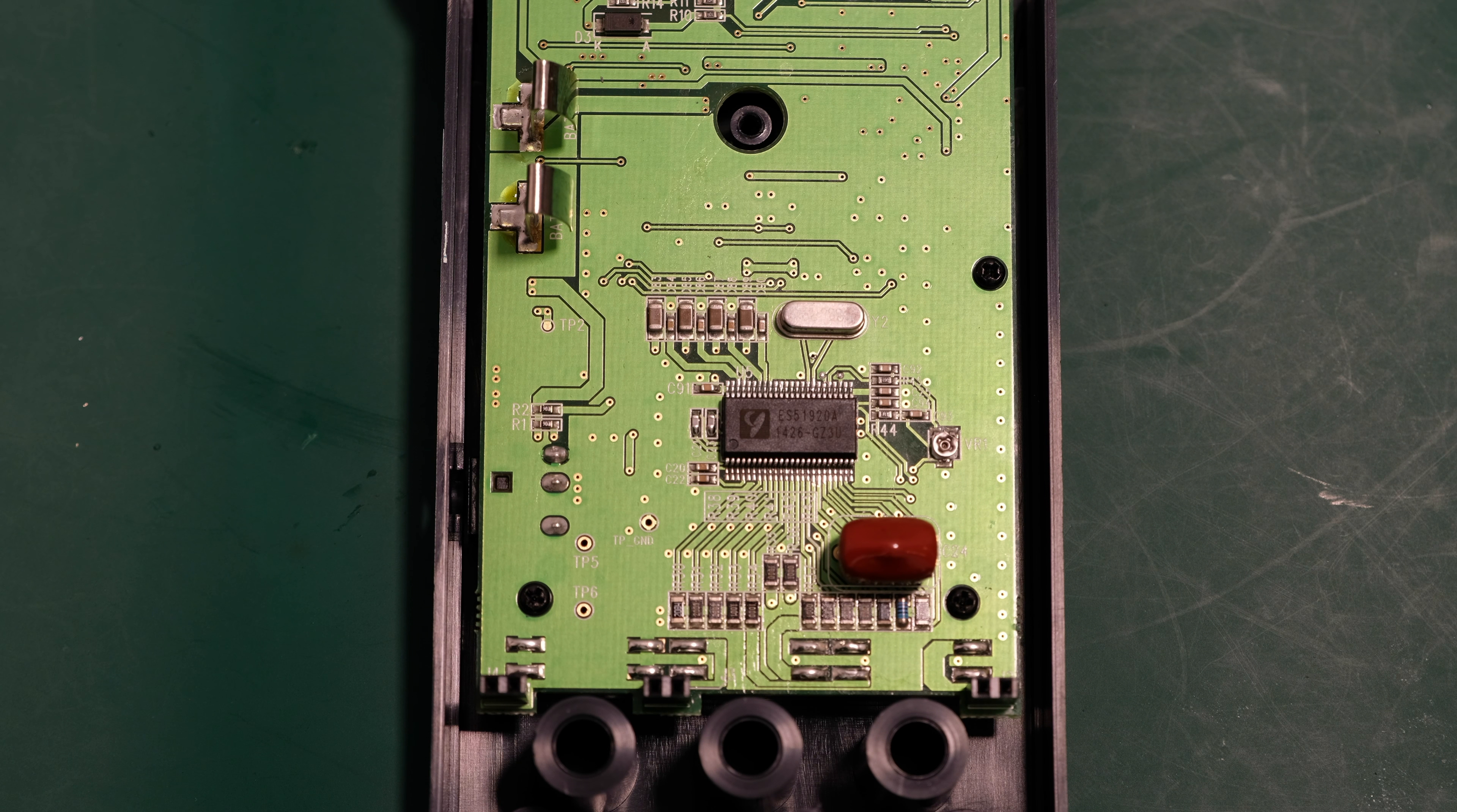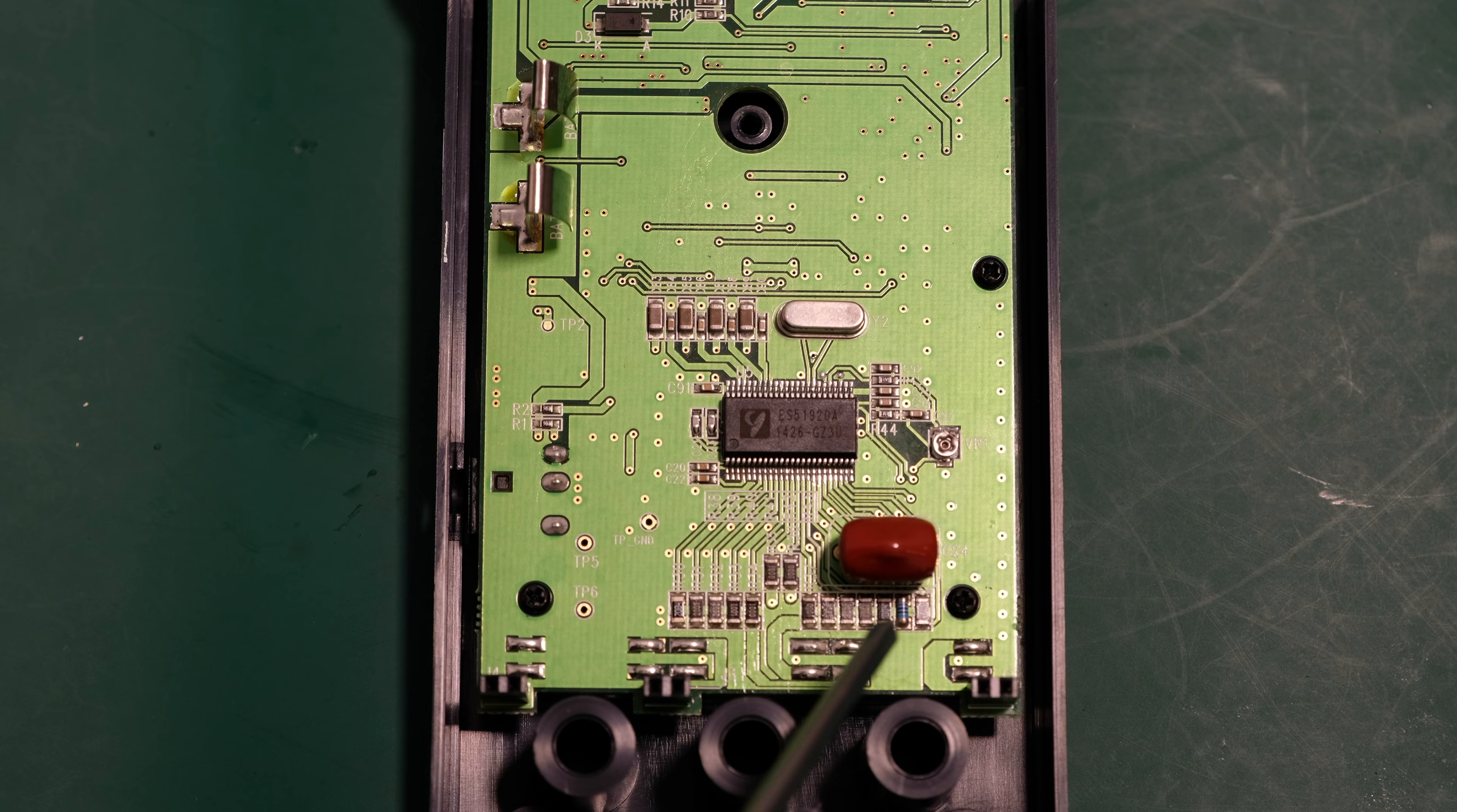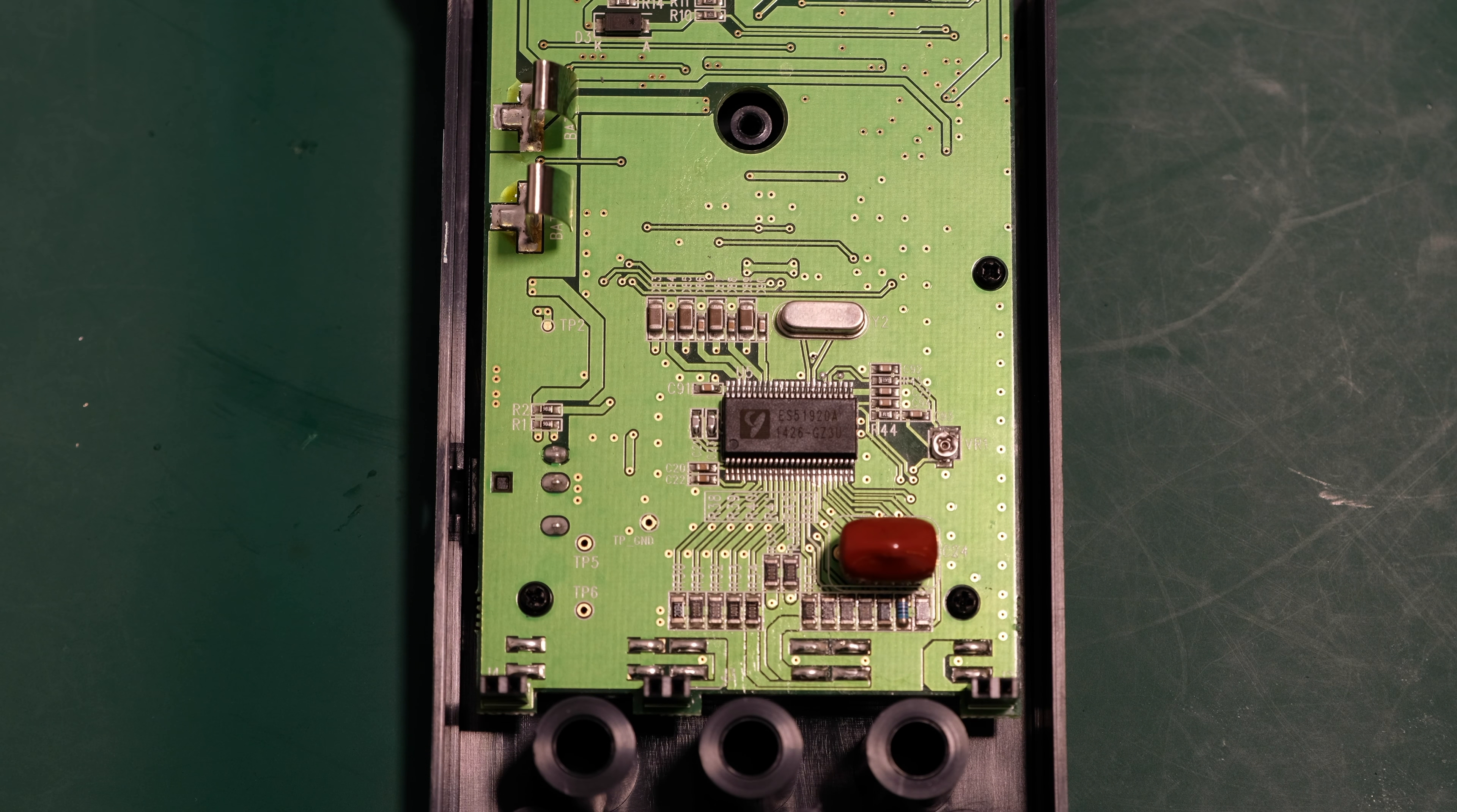So we'll just have a quick look at the chip here. That is an ES51920A. That actually is a dedicated LCR chip, basically. That's why there are so few components in here. It's like an all-in-one solution. We have a bunch of resistors and capacitors. There's a crystal here. There's another crystal you can't quite see.